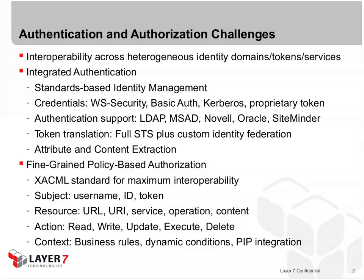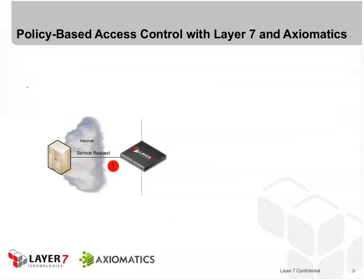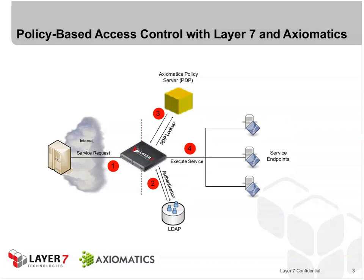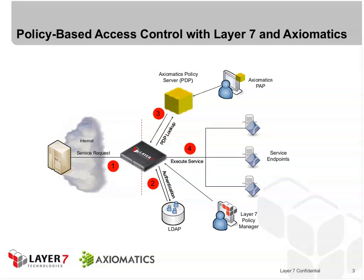Here's how you can perform this policy-based access control using Layer 7 and Axiomatics. A request comes in for some service or API and gets intercepted by the Layer 7 SOA gateway. Layer 7 goes out to some authentication server — be it LDAP or some proprietary server — and authenticates that credential. It then makes a call out to the Axiomatics policy server, which becomes the policy decision point. If the response says the operation is permitted, the service is executed and data from the backend service endpoints is returned to the client. At design time, there are policy authoring points from both Axiomatics and Layer 7 to define these policies.